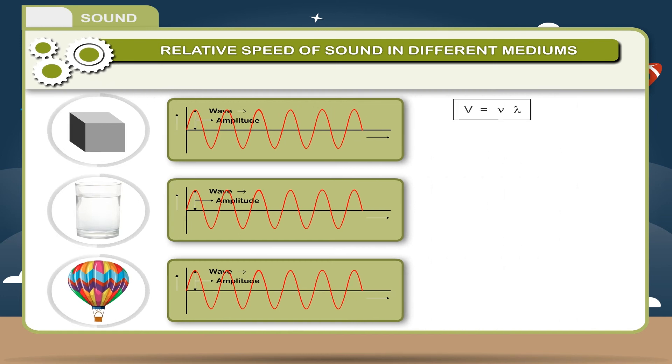It can be calculated by using the formula V is equal to F lambda where F is frequency, lambda, wavelength of the wave.